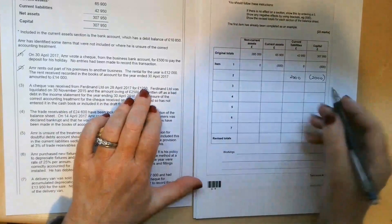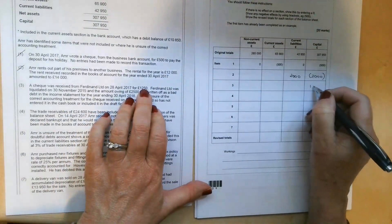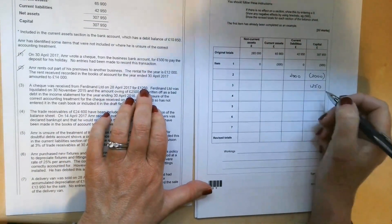So that's going to increase our profit. I'm going to put that straight into the income statement. So the profit will go up by £1,250. That will be treated as other income.